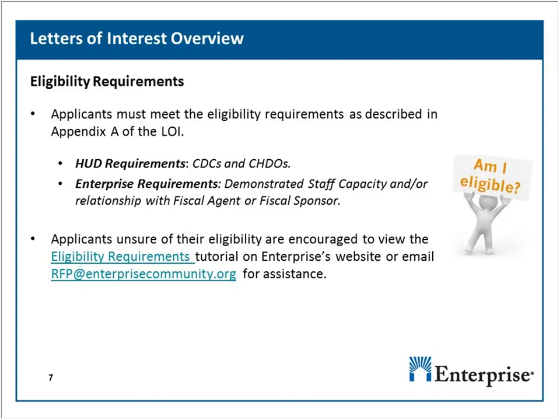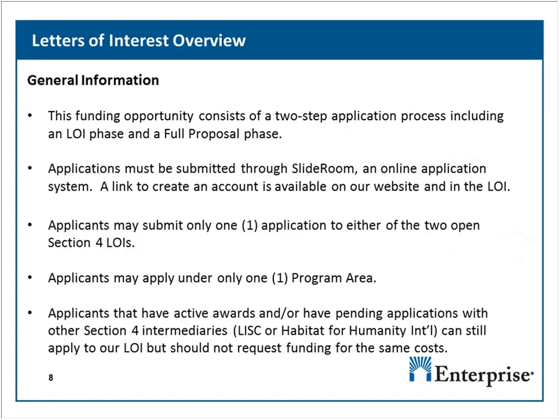This funding opportunity consists of a two-step application process: the LOI phase and then a full proposal phase. Applications must be submitted through SlideRoom, which is new this year — it is our online application system. A link to create an account is available on our website and the LOI itself. Applicants may submit only one application to either of the two open Section 4 LOIs and may only apply under one program area.